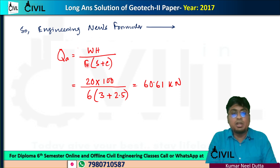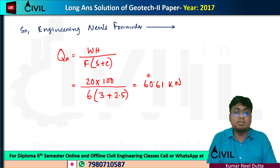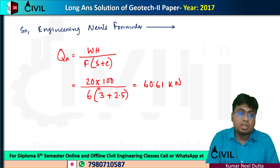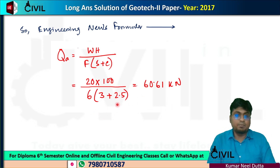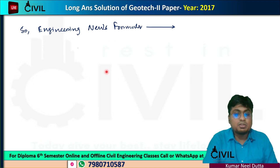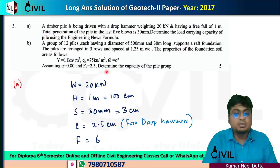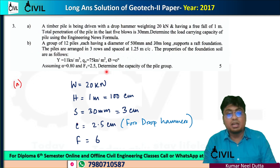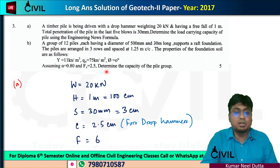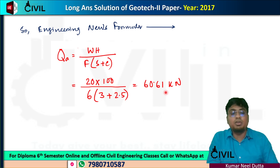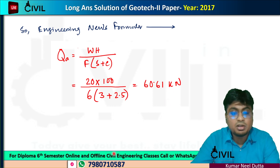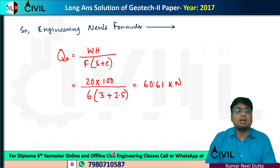Applying the formula: W = 4 kN, H = 1 m, F = 6, S = 3 cm, C = 0.25 cm. Doing this calculation, the answer is 60.61 kN. This is the correct answer for the allowable load carrying capacity.